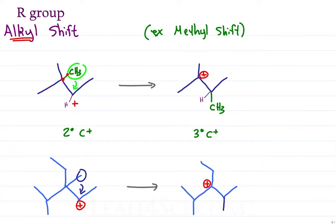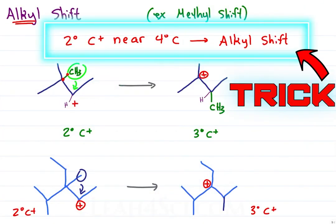Now that we know the basics, here's the trick to look out for. A secondary carbocation near a quaternary carbon will give you an alkyl shift, ideally a methyl shift.